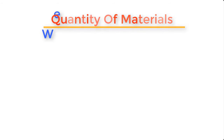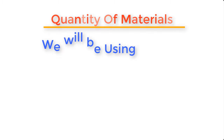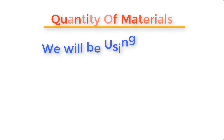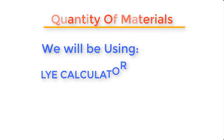Having said this, the next thing we will do is determine the quantity of materials we are going to use. In this preparation we're going to use 900 ml by volume — which is about 830 grams by weight — of palm canal oil. We're going to use the lye calculator to determine the amount of caustic potash and the volume of water required to dissolve it.